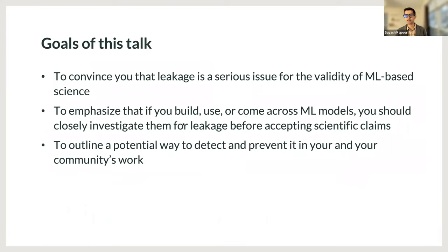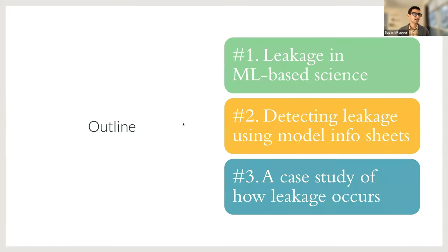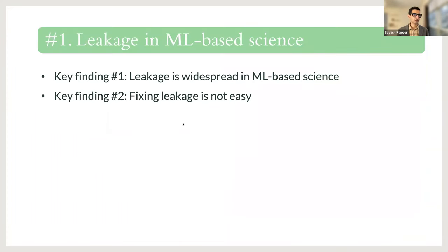Zooming out for a second, here are three goals for this talk. The first is to convince you that leakage is a serious issue for the validity of ML-based science. The second is to emphasize that if you build or use ML models in your own work, you should closely investigate them for leakage before accepting any scientific claims. The third is to outline one potential way to detect and prevent leakage. The talk has three approximately equal parts: leakage in ML-based science, detecting leakage, and a case study. Two key findings: leakage is widespread, and fixing it is not so simple.